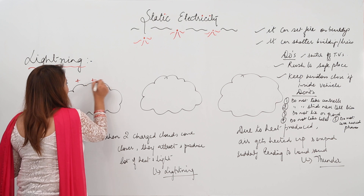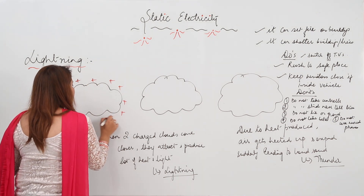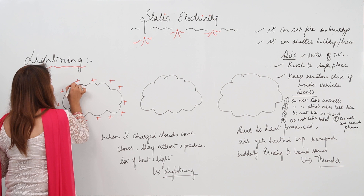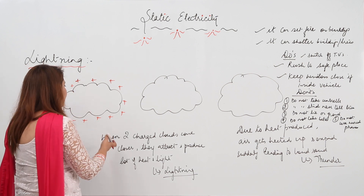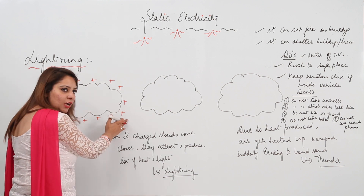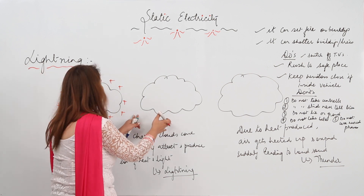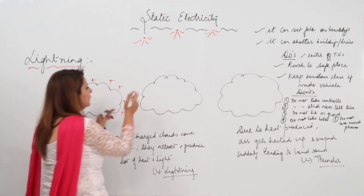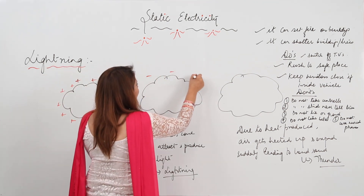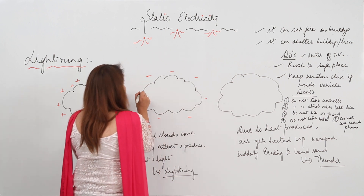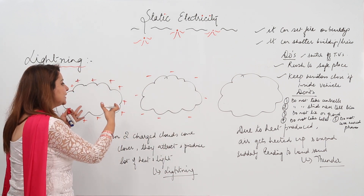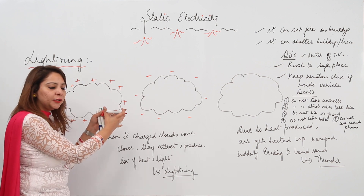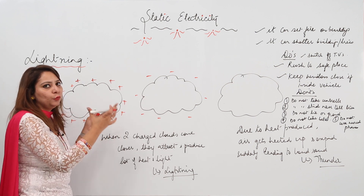Suppose this cloud is positively charged, and a nearby cloud is uncharged. Due to induction, the uncharged cloud will acquire an opposite charge — so if the first is positive, it will acquire a negative charge. Clouds are not stationary; they are moving.